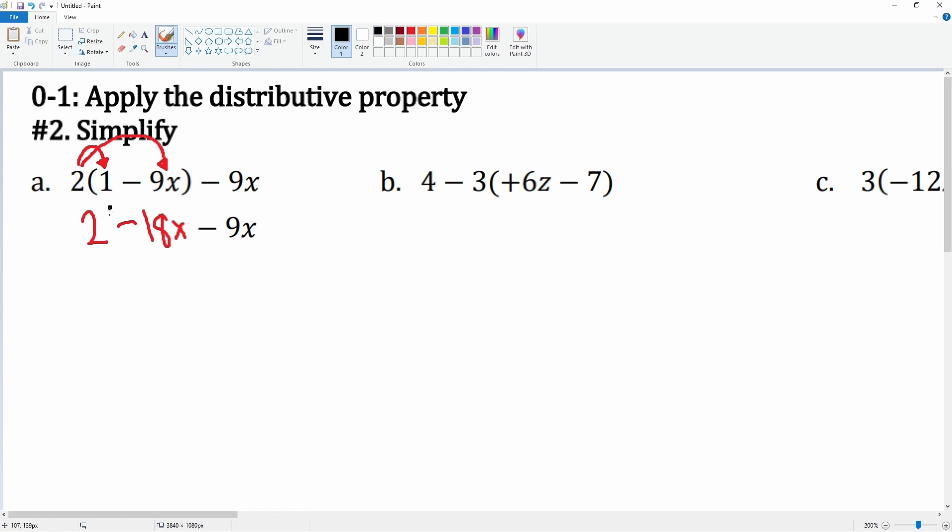are the variables. So you have negative 18x and negative 9x—together they make negative 27x. Nothing happens to that 2 out in front, so we can just write plus 2. So the final answer is negative 27x plus 2.